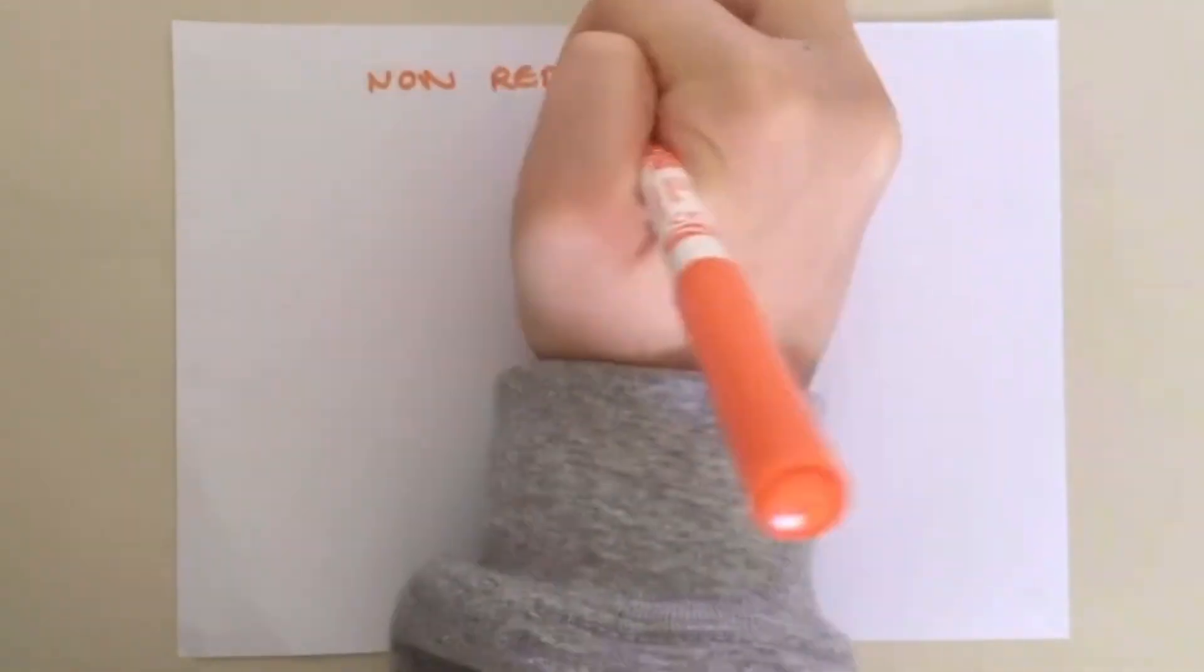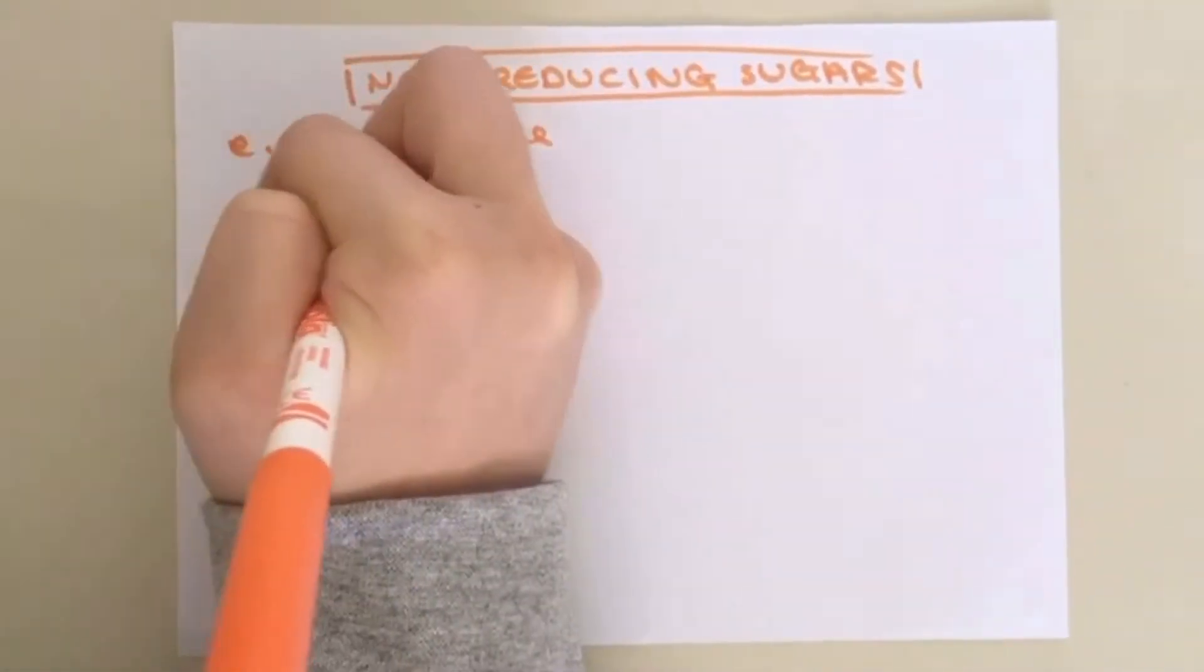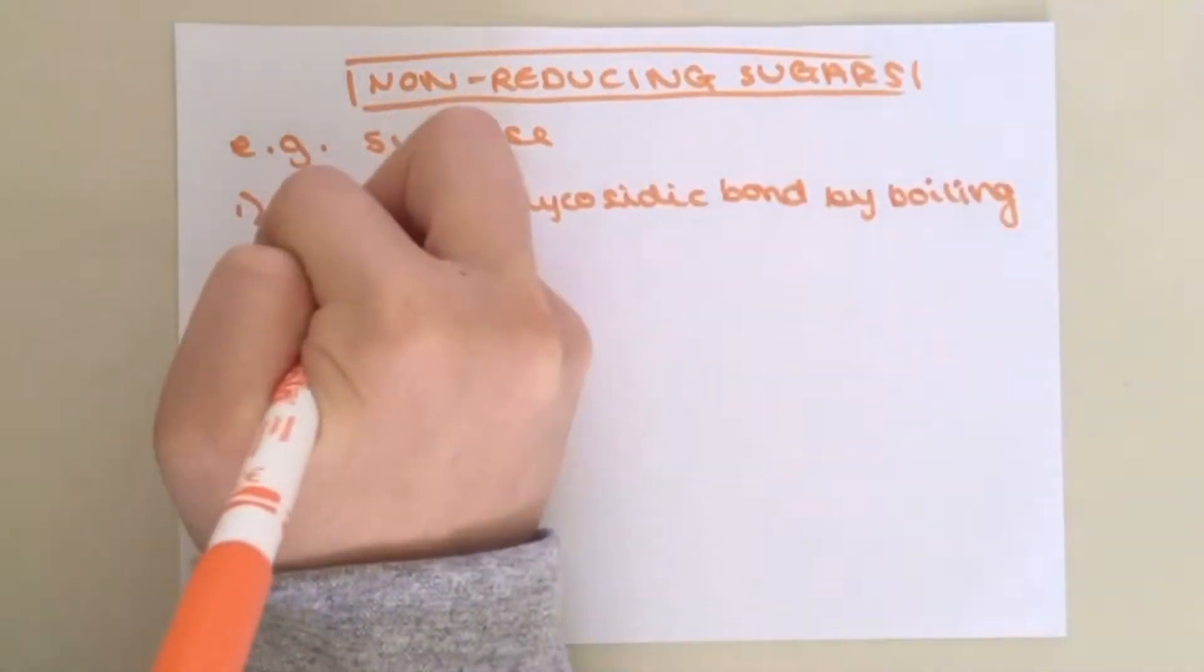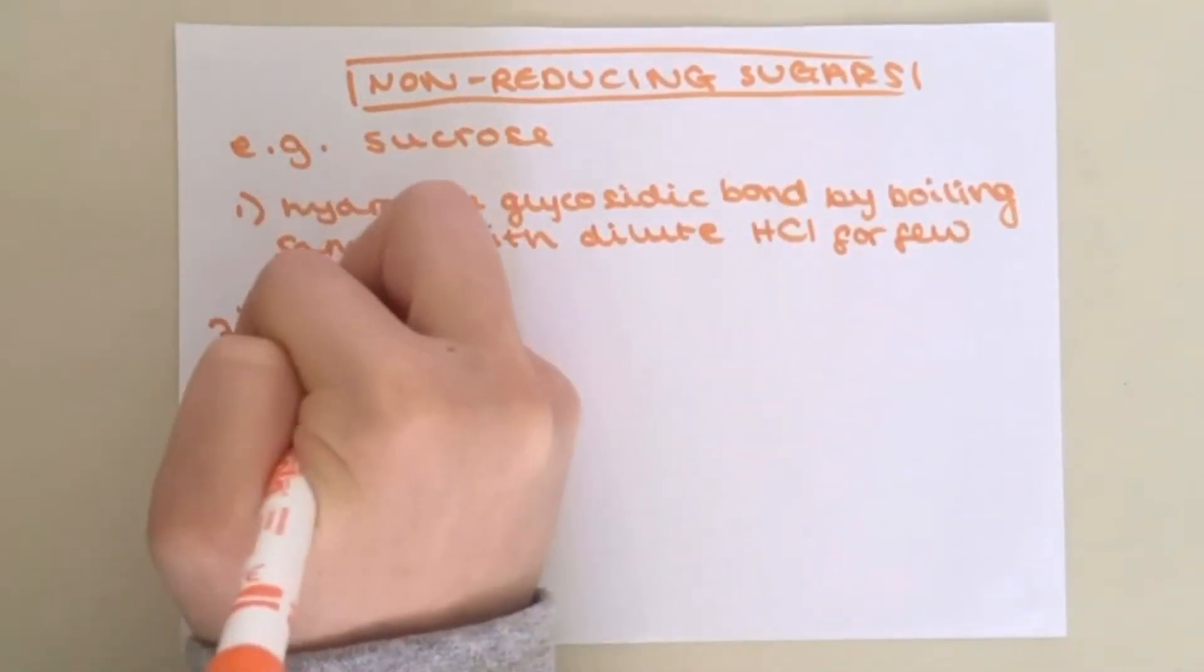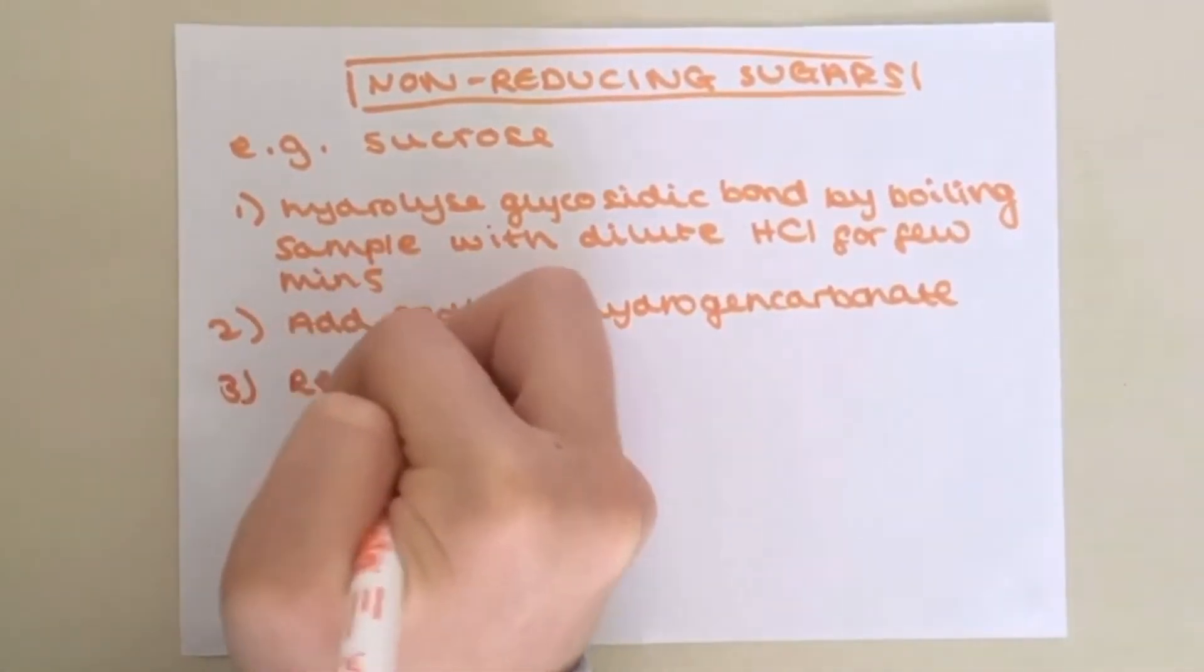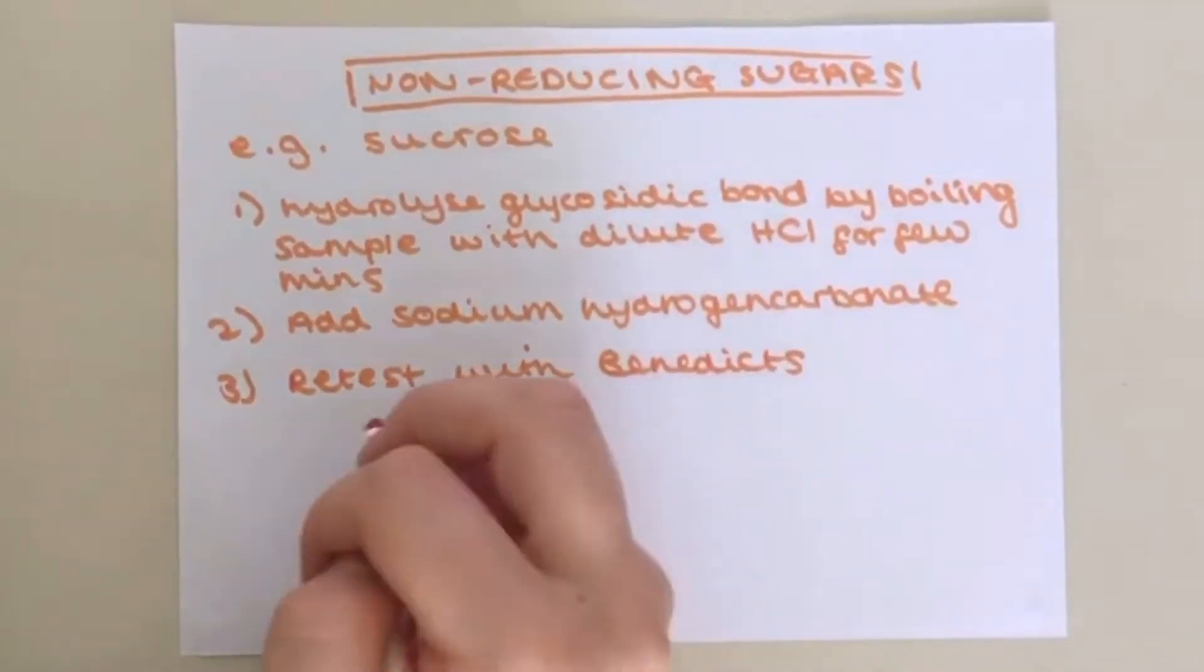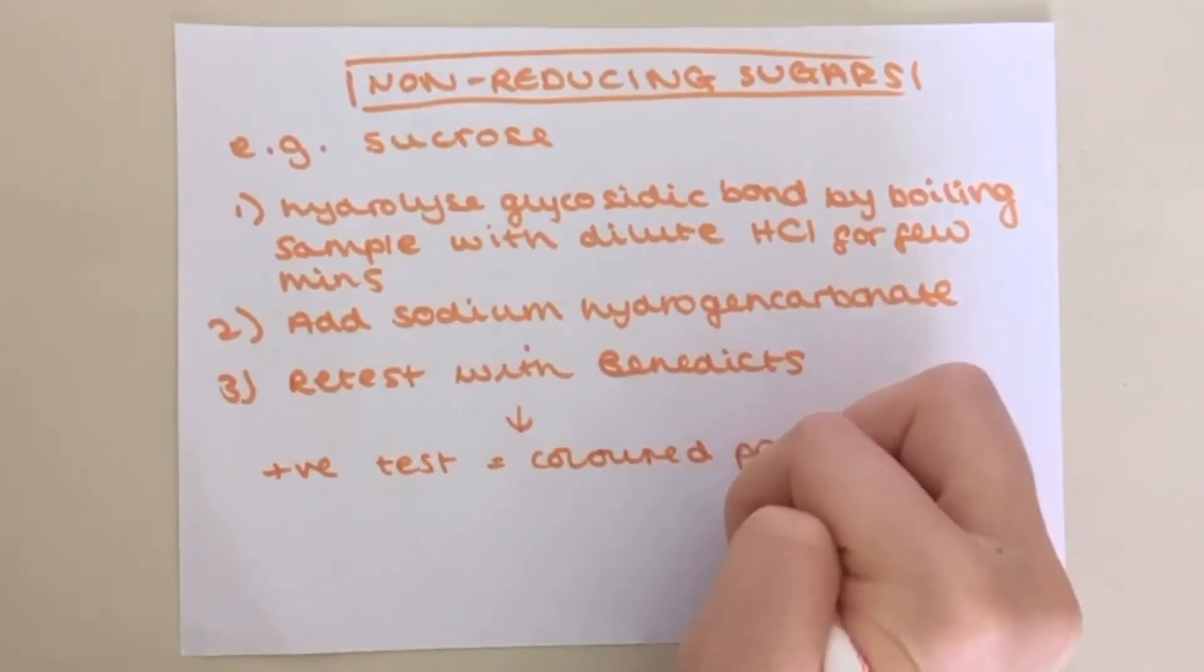To test for non-reducing sugars such as sucrose, you need to first hydrolyse the glycosidic bond by boiling the sample with an equal volume of dilute HCl for a few minutes. Then add sodium hydrogen carbonate solution to neutralise the HCl. Finally, test with Benedict's reagent as previously described and a coloured precipitate will be produced if a non-reducing sugar was originally present.